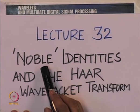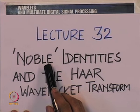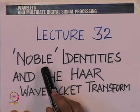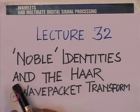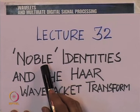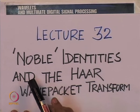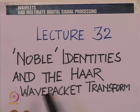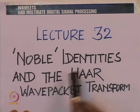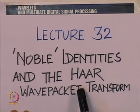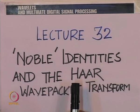Therefore, in the lecture today we intend to talk about some identities pertaining to multirate digital signal processing which are often called the noble identities — noble in the sense that they are extremely important in building and analyzing multirate structures. Further, we will use the noble identities to build a wave packet transform in the context of the Haar multiresolution analysis. With that little introduction, let us proceed to talk about the noble identities that govern the behavior of multirate systems.